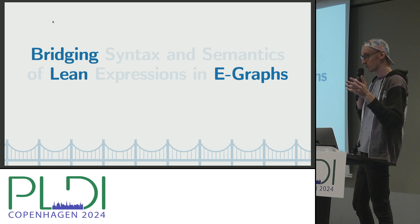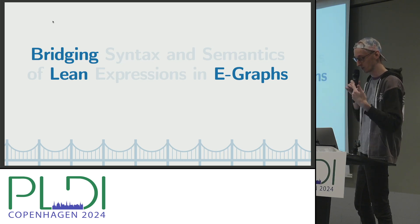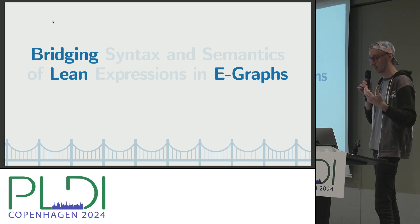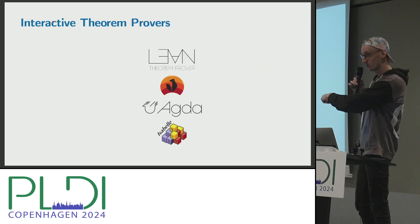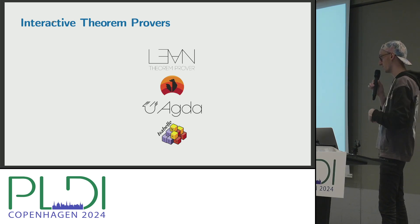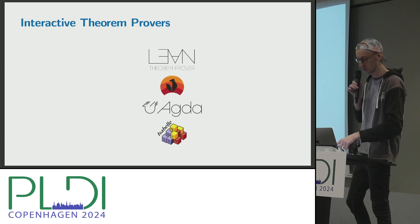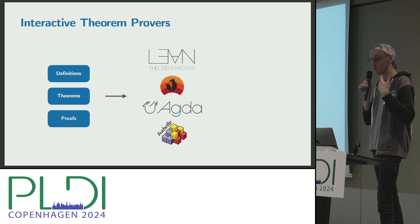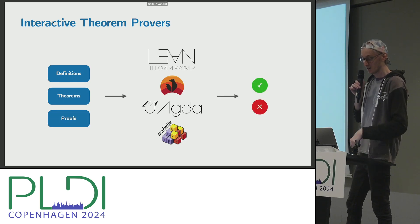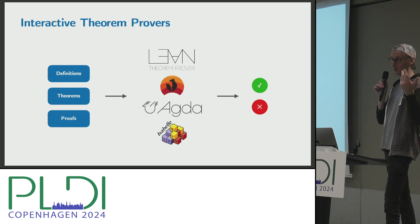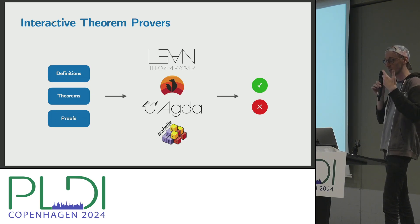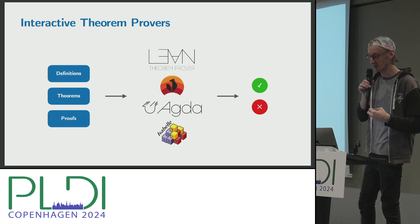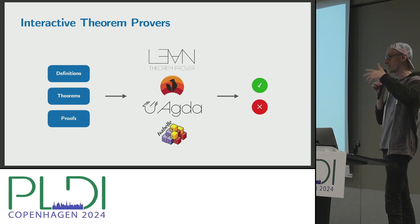Since maybe not all of you have a background on interactive theorem provers, I'll quickly motivate what they are. You may have seen names like Lean, which is a theorem prover, and Coq. These systems are ones in which you can express basically arbitrary mathematical definitions, theorems, and proofs. What these systems give you in return is a correctness check — they tell you whether what you wrote actually makes sense. For definitions and theorems, that's kind of like what a compiler might do, checking for ill-typed expressions.